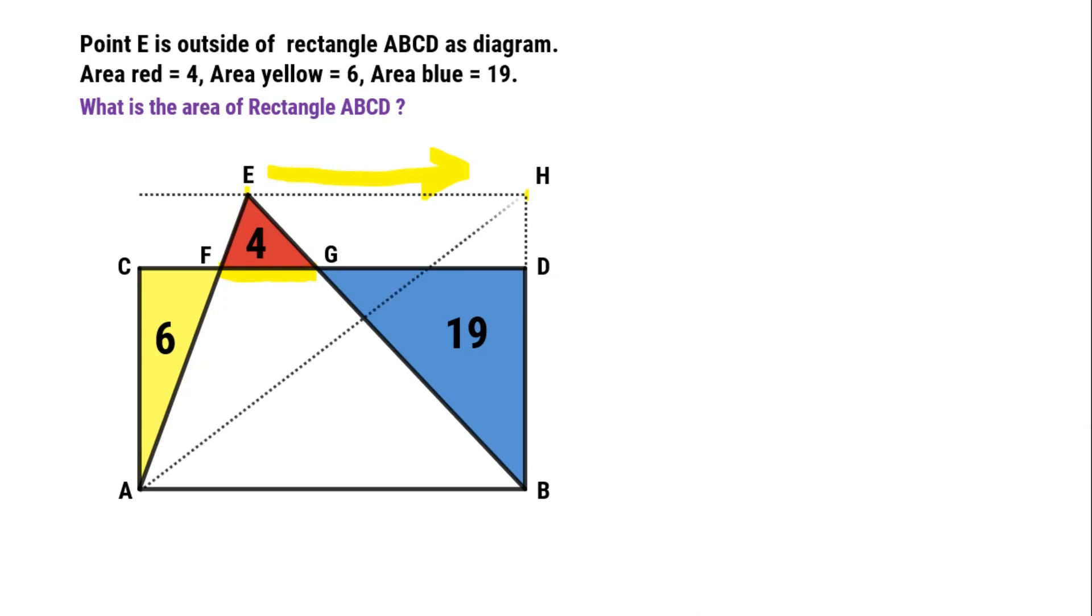Connect AH, intersecting CD at point J. Now let's prove FG equals JD. FG over AB equals HD over HB because triangle EFG is similar to triangle EAB. HD is the height of triangle EFG. JD over AB also equals HD over HB because triangle HJD is similar to triangle HAB. Therefore, we can get FG equals JD.